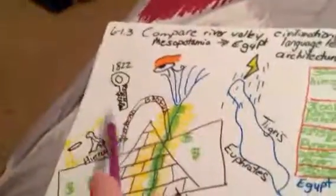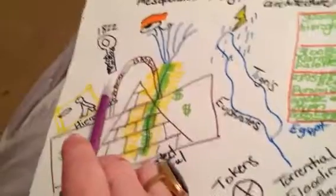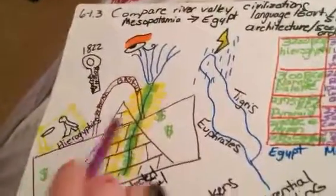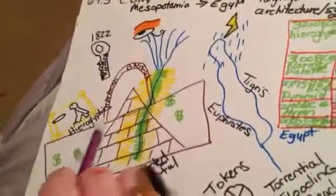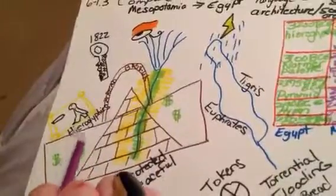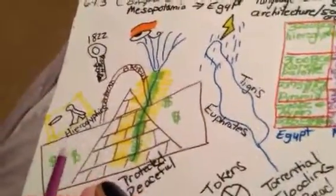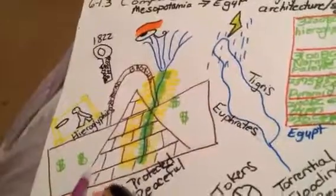I also included in 1822 the Rosetta Stone because that was kind of the key to unfolding our hieroglyphics and us being able to decode Egyptian writing and find out all about their amazing society.